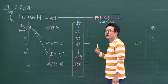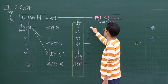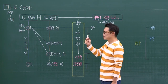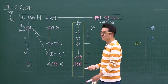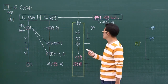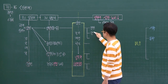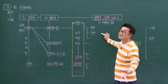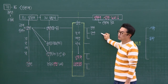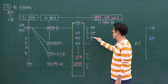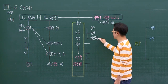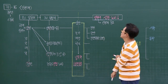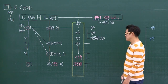여전히 권력을 쥐고 있는 양반을 권반이라 하고, 중앙 권력에서 배제되어 향촌에 내려가서 나 양반이네 하고 사는 사람들을 향반이라고 해요. 그리고 완전히 몰락한 양반들을 잔반이라고 합니다. 권반, 향반, 잔반의 모습들 기억하시면 되겠습니다.